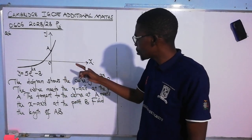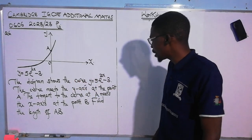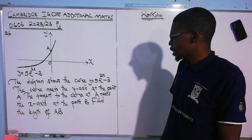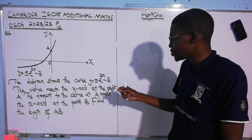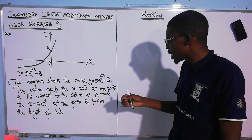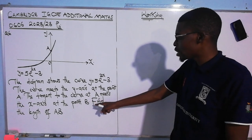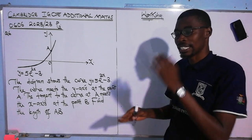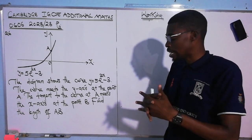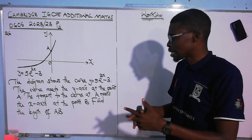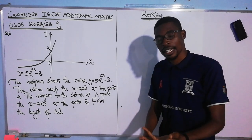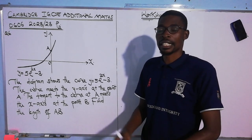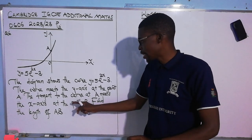This is question 6 of that particular paper. The question says: the diagram shows the curve y = 5e^(2x) − 3. The curve meets the y-axis at point A, and the tangent to the curve at point A meets the x-axis at point B. Find the length of AB. We don't know where B exactly is, so to get the length of AB we need the coordinates of both A and B, then use the distance formula.